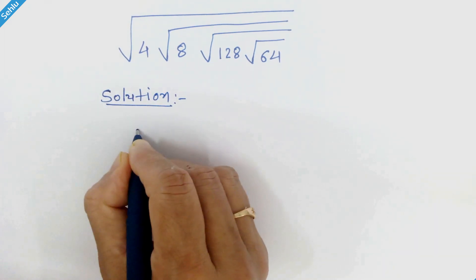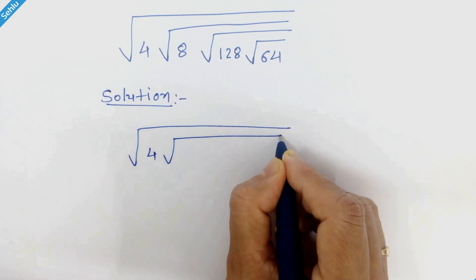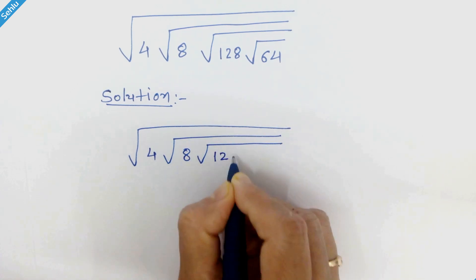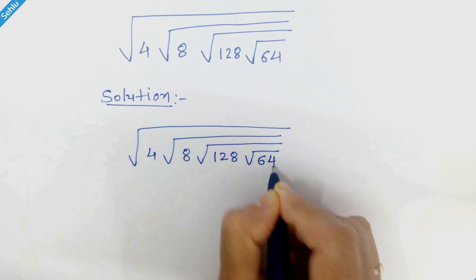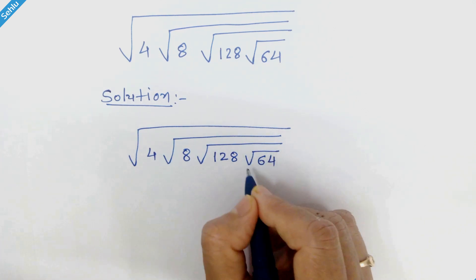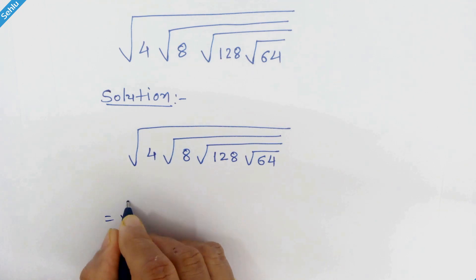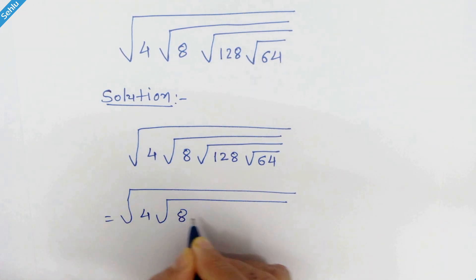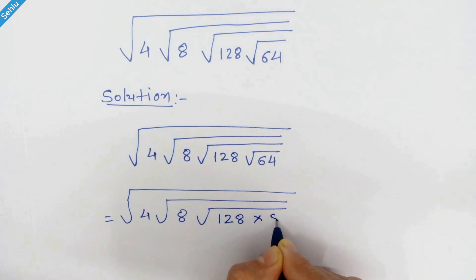Here we have square root of 4 times square root of 8 times square root of 128 times square root of 64. Square root of 64 can be written as 8, so we can write square root of 4 times square root of 8 times square root of 128 times 8.